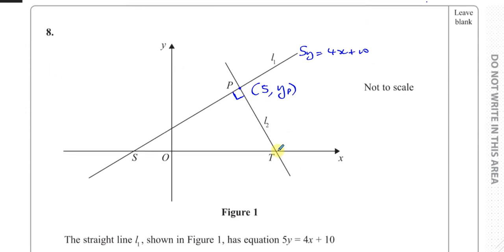Part A says find an equation for line 2, writing your answer in the form ax plus by plus c equals 0, where a, b, and c are integers. So we need to find the equation of this line. It's a straight line, and to find the equation of a straight line, we need two pieces of information. We need the gradient of the line, and we need a point on the line.